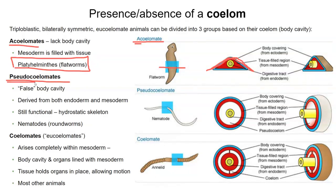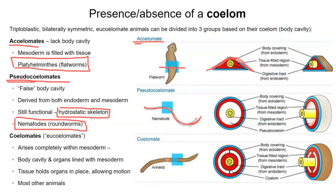There's also something called a pseudocoelomate — pseudo meaning false. There is a body cavity, but it's not a true body cavity, and it's usually used for movement or hydrostatic movement. Our example here is nematodes. Nematodes are sometimes described as a tube within a tube because they have a complete digestive tract going all the way through the worm, and that hole is surrounded by this body cavity. The pseudocoelom is formed partially by the mesoderm and partially by the endoderm.